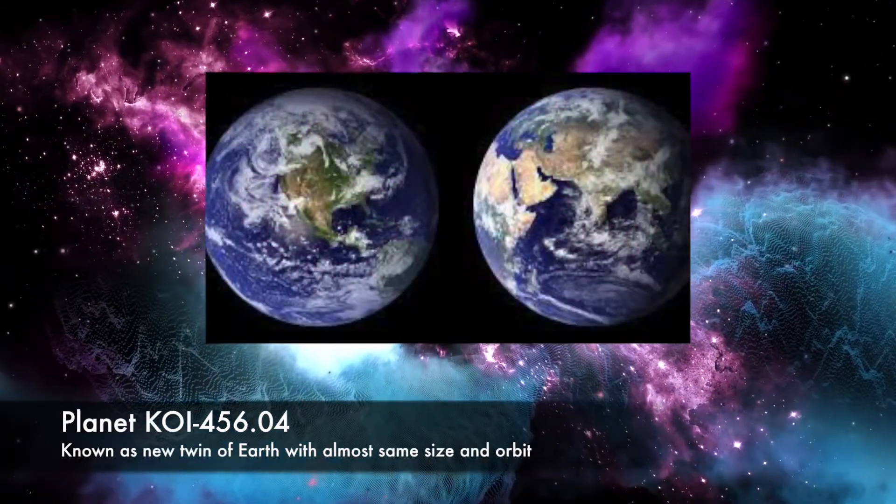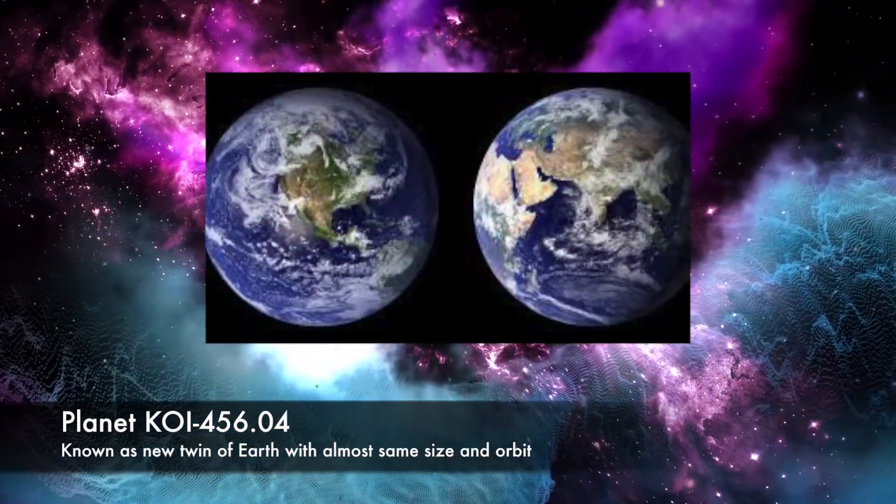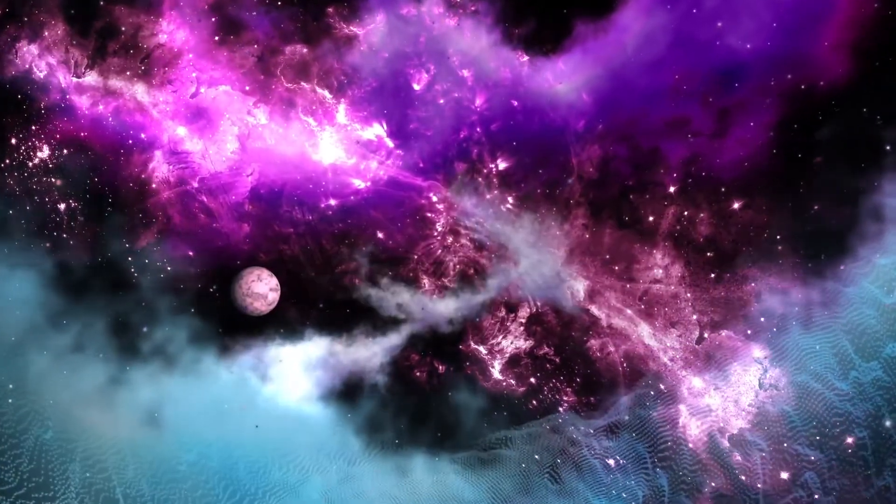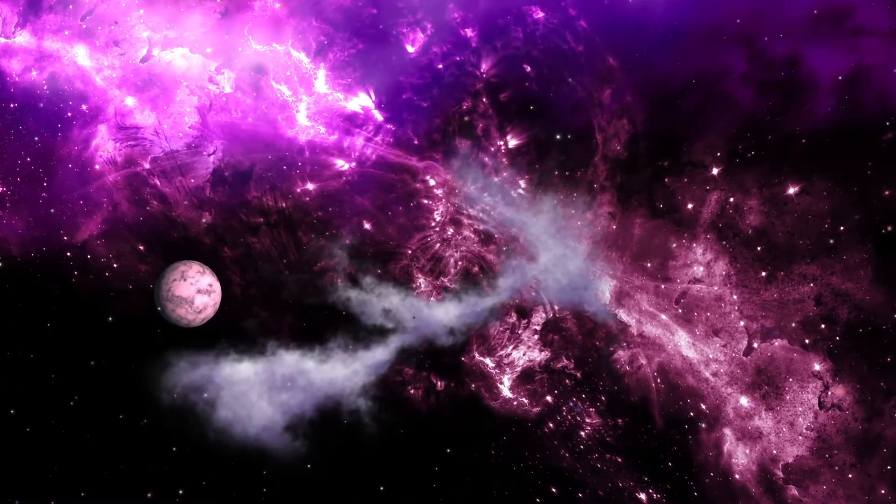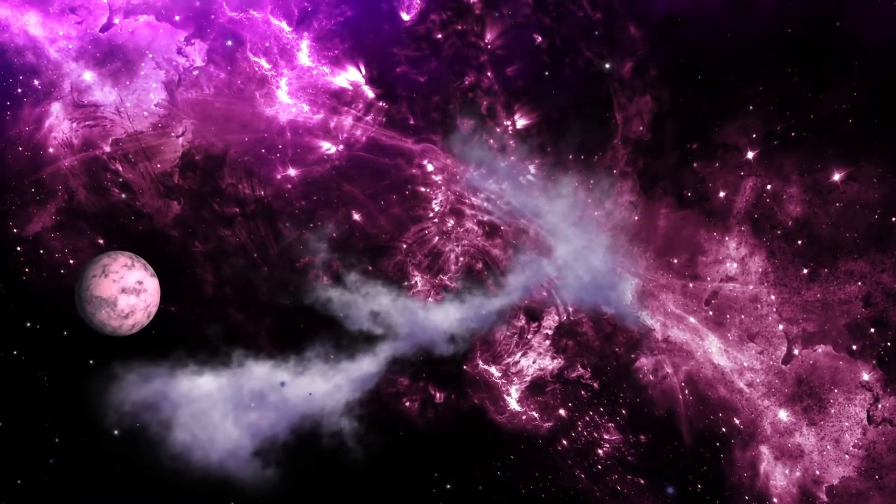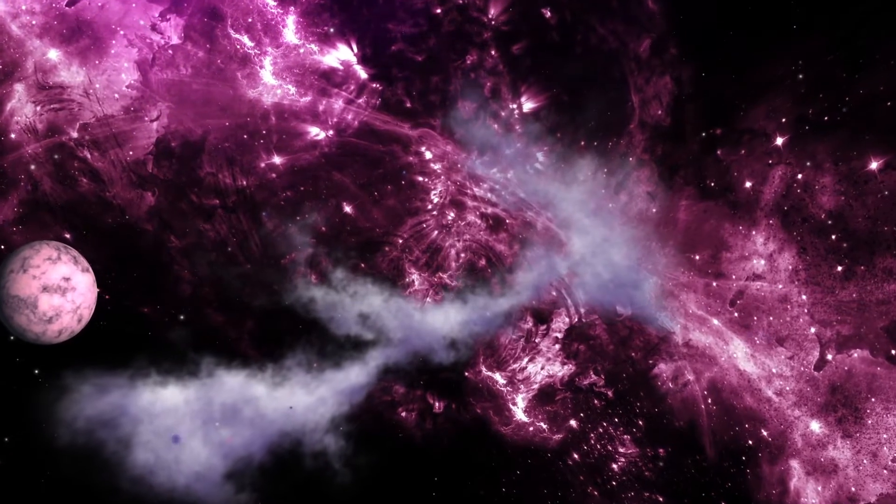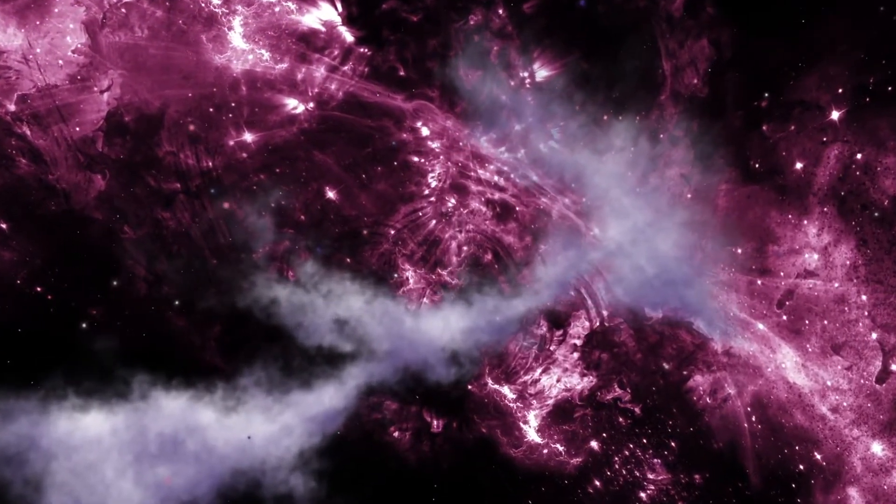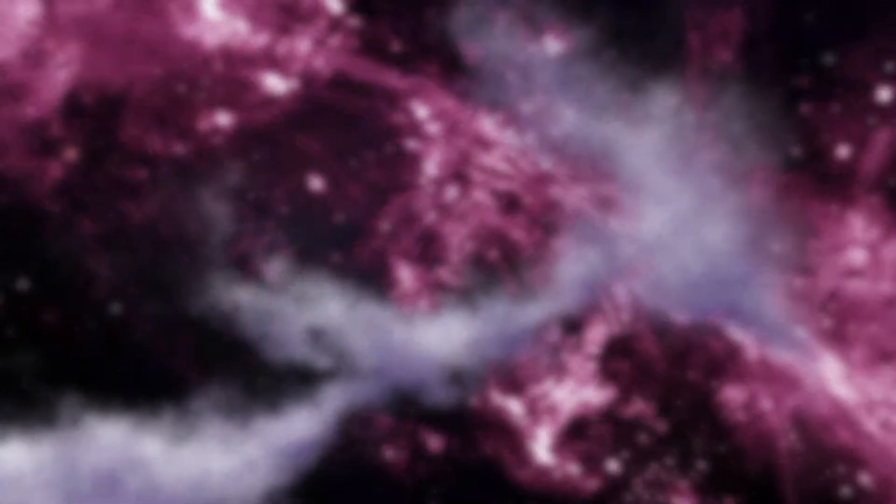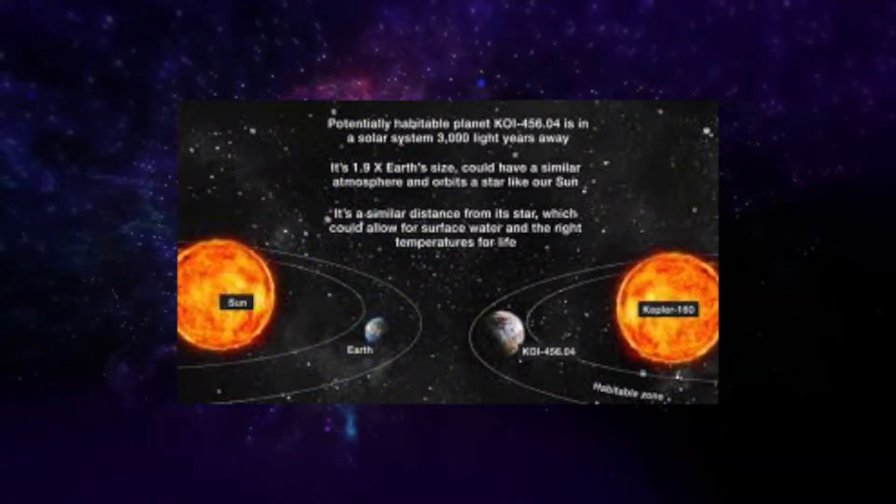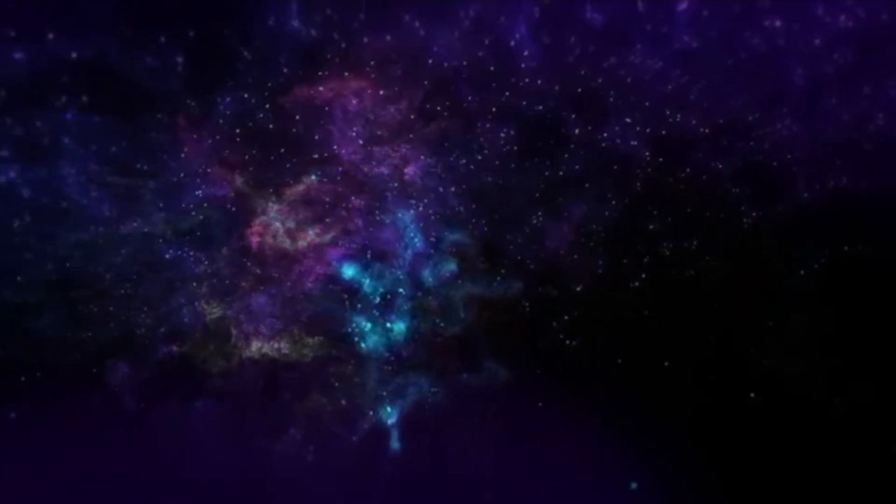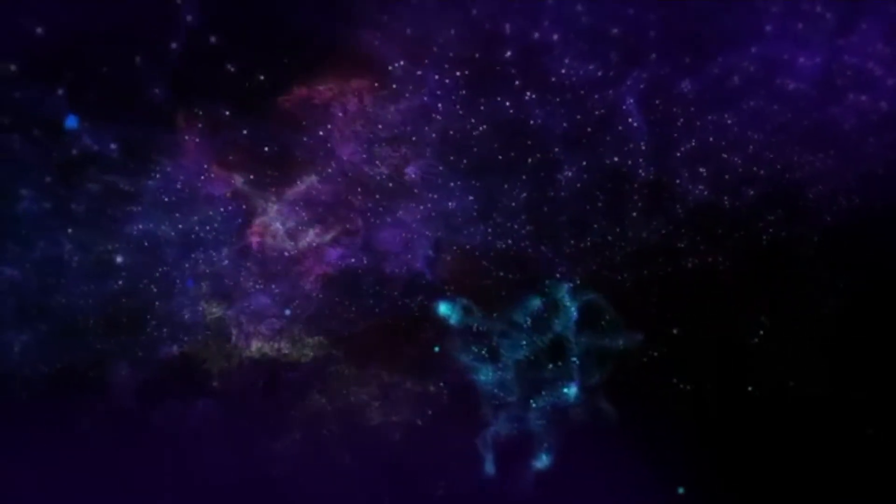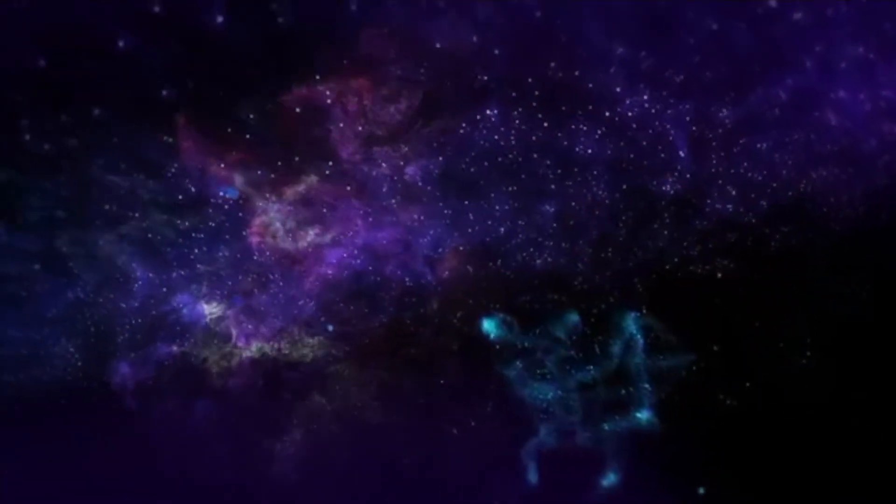Planet KOI 456.04 appears similar to Earth in size and orbit, raising new hopes we have found perhaps the best candidate yet for a habitable exoplanet. The new findings support the case for devoting more time to looking for planets orbiting stars like Kepler-160 and our sun, where there's a better chance a planet can receive the kind of illumination, or in simple words, light to support life.